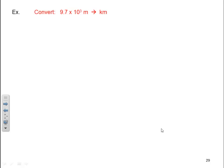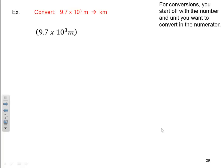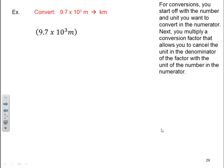Let's do some conversions. Let's try to convert 9.7 times 10 to the third meters to kilometers. For conversions, you start off with the number and unit you want to convert in the numerator. So I've got 9.7 times 10 to the third meters. Next, you multiply a conversion factor that allows you to cancel the unit in the denominator of the factor with the unit of the number in the numerator. I need to come up with a conversion factor that I can place there and get in the denominator to cancel out with meters. Well, one of them I told you to memorize is that for every thousand meters, there's one kilometer. Notice how I placed it. I want to make sure that my meter in my numerator is canceling with my meter in my denominator.